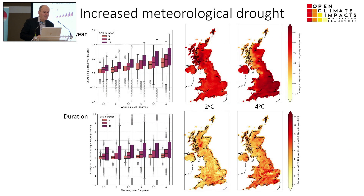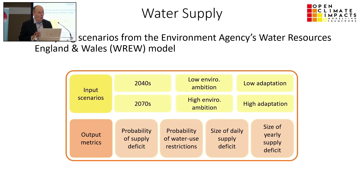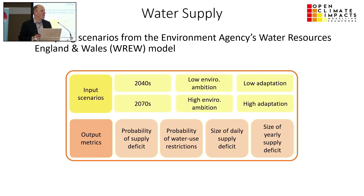For meteorological drought, both in terms of number per year and duration, from two to four degrees it's getting significantly worse across the country. For water supply, one of the benefits in OpenCLIM is linking models together using Daphne. The WRSE model — the Environment Agency's Water Resources model for England and Wales — is used fundamentally for looking at water supply issues. In OpenCLIM, it's a physics-based model and we're asking new questions of it. Looking at the 2040s and 2070s, different levels of environmental ambition and adaptation, we're beginning to make that model available to CCRA for those types of assessments.